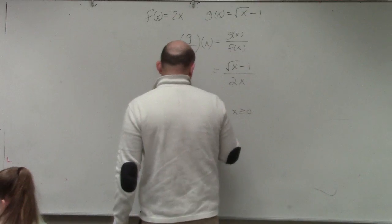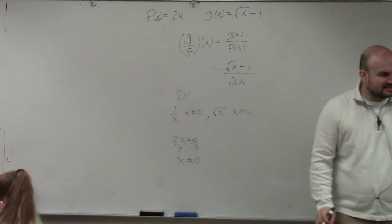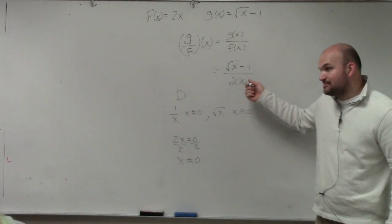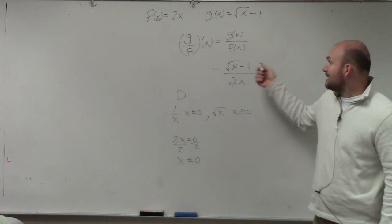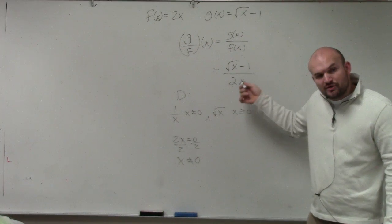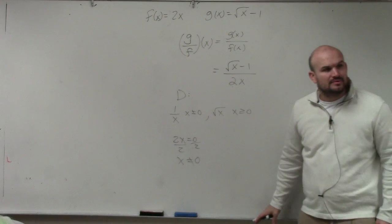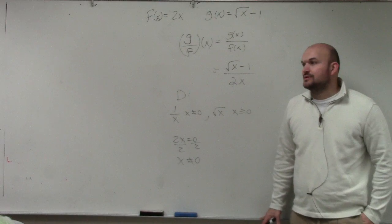So therefore, we could say that we know x cannot equal 0. Correct? Because if x equals 0 in this problem, you can take the square root of 0. That's 0. 0 minus 1 is negative 1. 2 times 0 is 0. You cannot have 0 in the denominator. So x cannot equal 0.